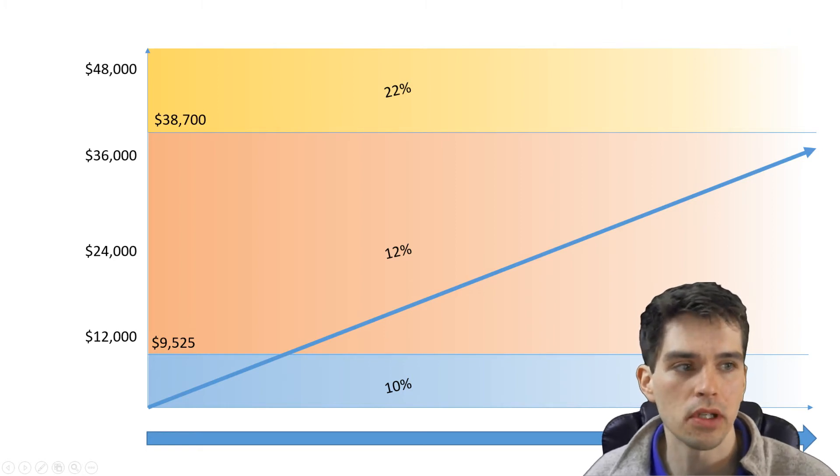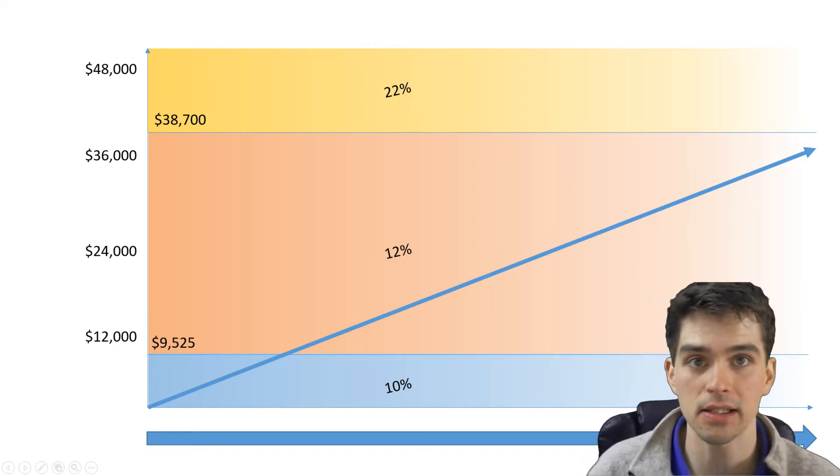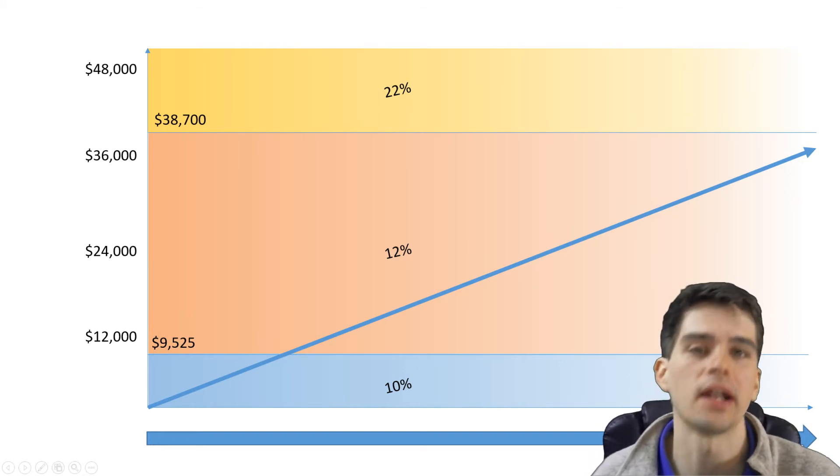So imagine this person who earns $36,000 a year. These are the guys that will tell you, I don't want to earn $40,000 a year because that would bump me up into the 22% tax bracket. And I don't want to go from paying 12% to paying 22% taxes. And that's the mistake as we'll find out here in a minute.